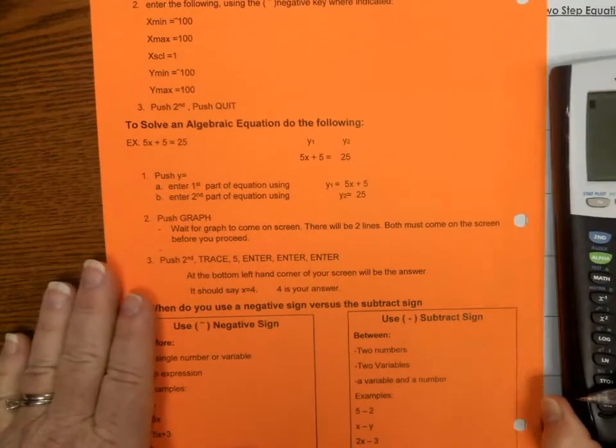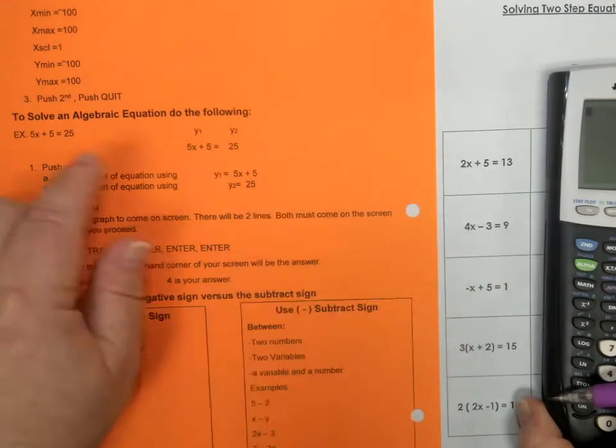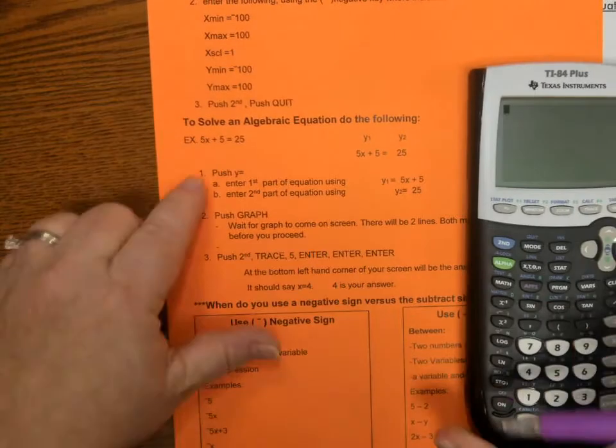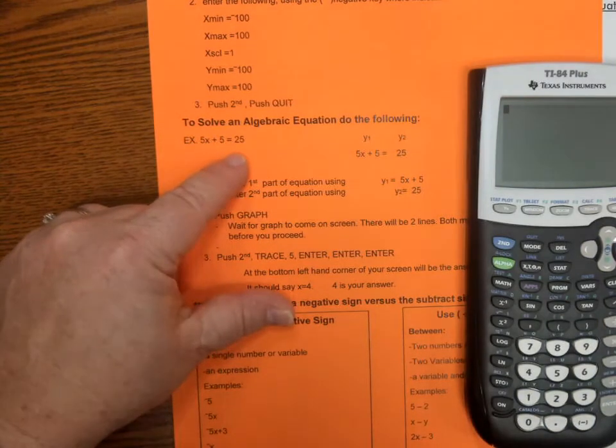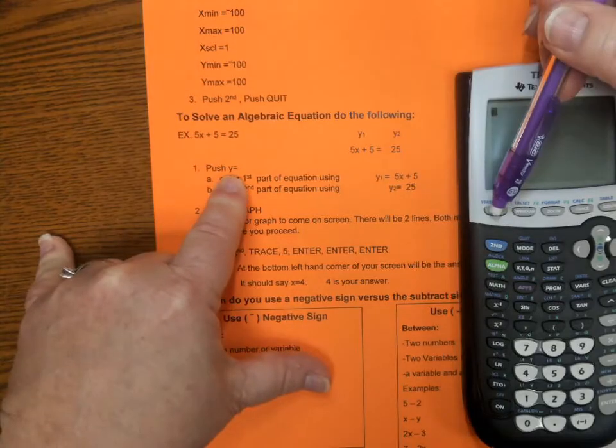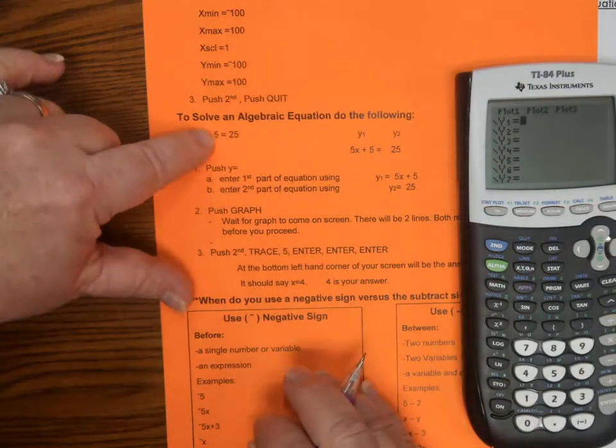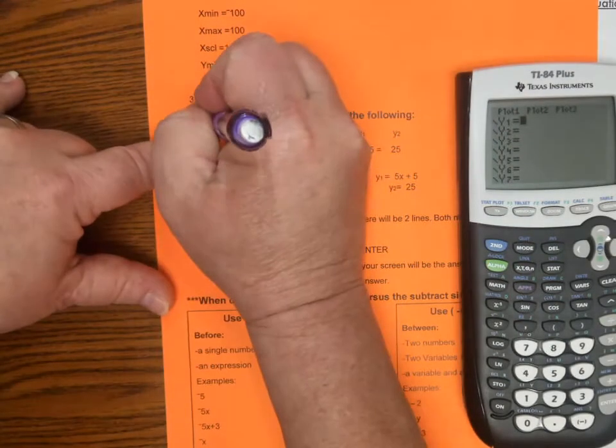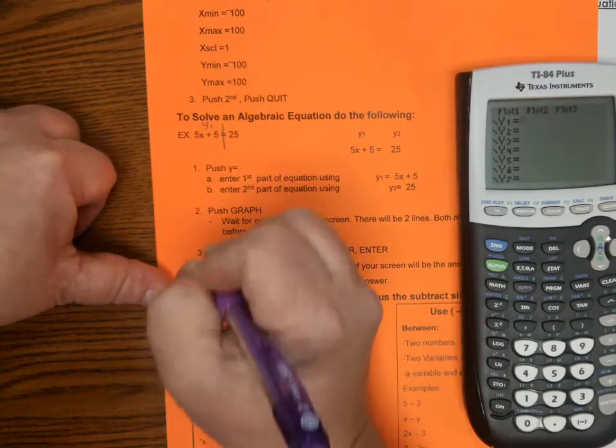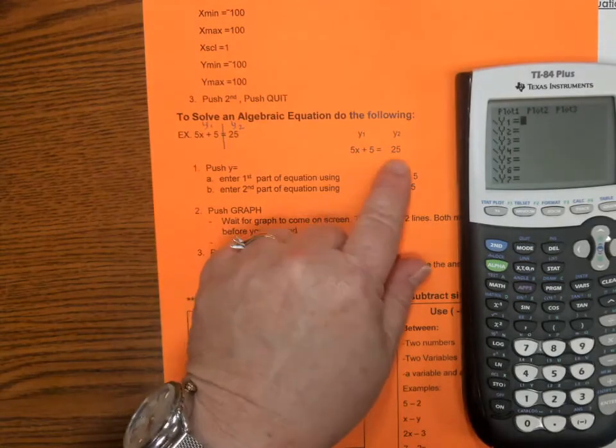It says example 5X plus 5 is equal to 25. We're going to use 2X plus 5 is equal to 13. We're going to come back over here. 5X plus 5 is equal to 25. What we need to do is we need to push the Y equals button. Right here. Y equals. You split right down the equal sign. And you make this side of your equation Y1, this side of your equation Y2. So, this is your Y1, and this is your Y2.